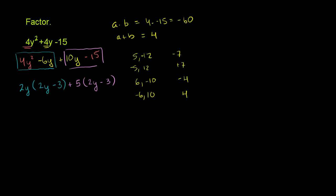So now you have two terms, and 2y minus 3 is a common factor to both. So let's factor out a 2y minus 3. This is equal to 2y minus 3 times 2y plus that 5.